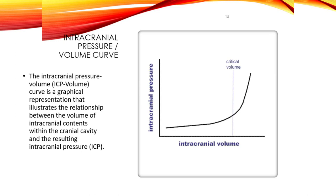In the herniation phase, if intracranial pressure continues to rise beyond the critical threshold, it can lead to brain herniation where brain tissue shifts or herniates within the skull. This is a life-threatening condition associated with severe neurological impairment and is fatal if not promptly addressed. The ICP-volume curve eventually reaches a critical threshold called the critical volume, beyond which further increases in volume lead to a rapid and dramatic increase in intracranial pressure, representing the limit of intracranial compensation.